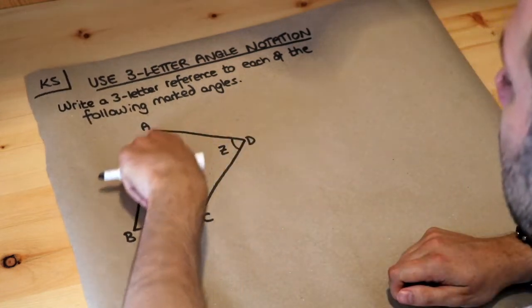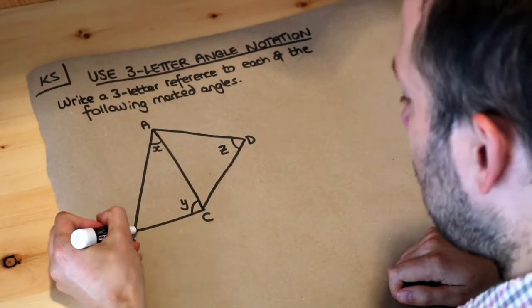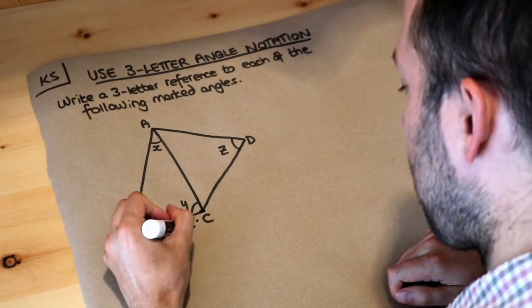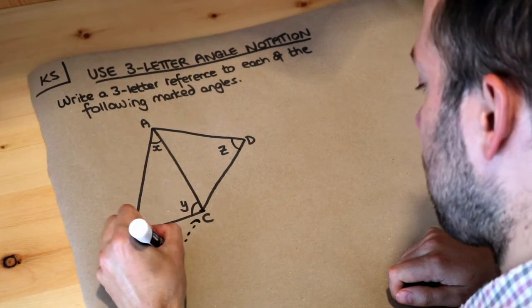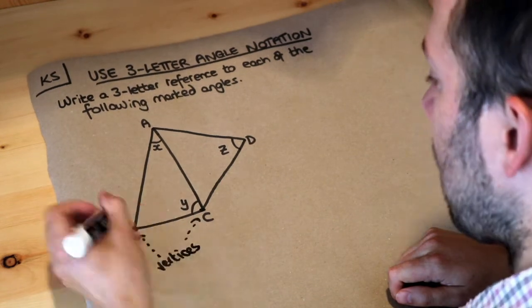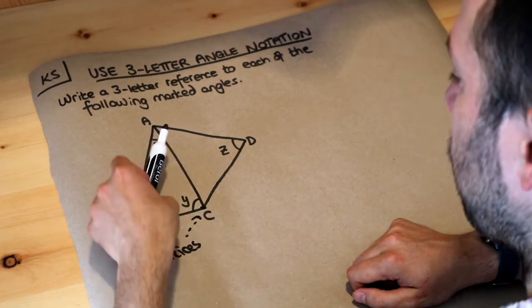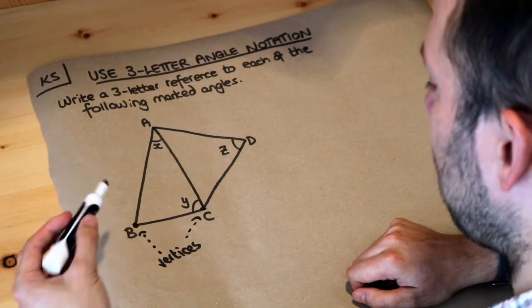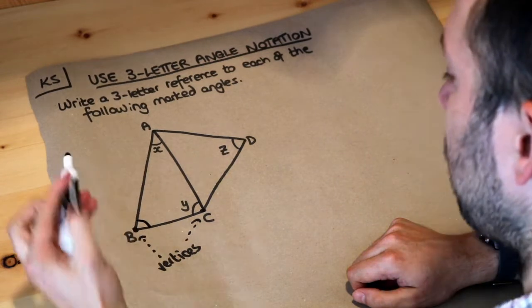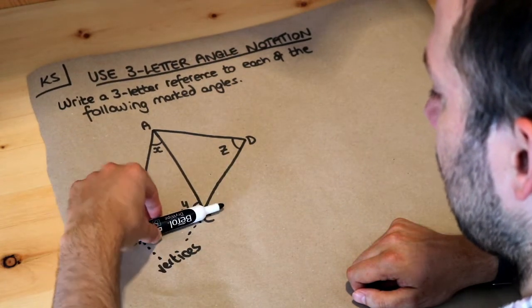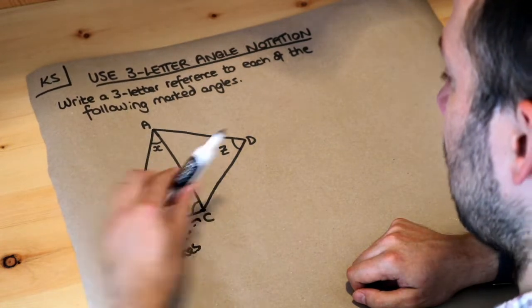Now sometimes we've got a diagram and we call the different corners in the diagram the vertices, the singular vertex, and we've got different lines or edges. We want to find the angle between two lines, so we might for example want this angle, the angle between this line and this line.